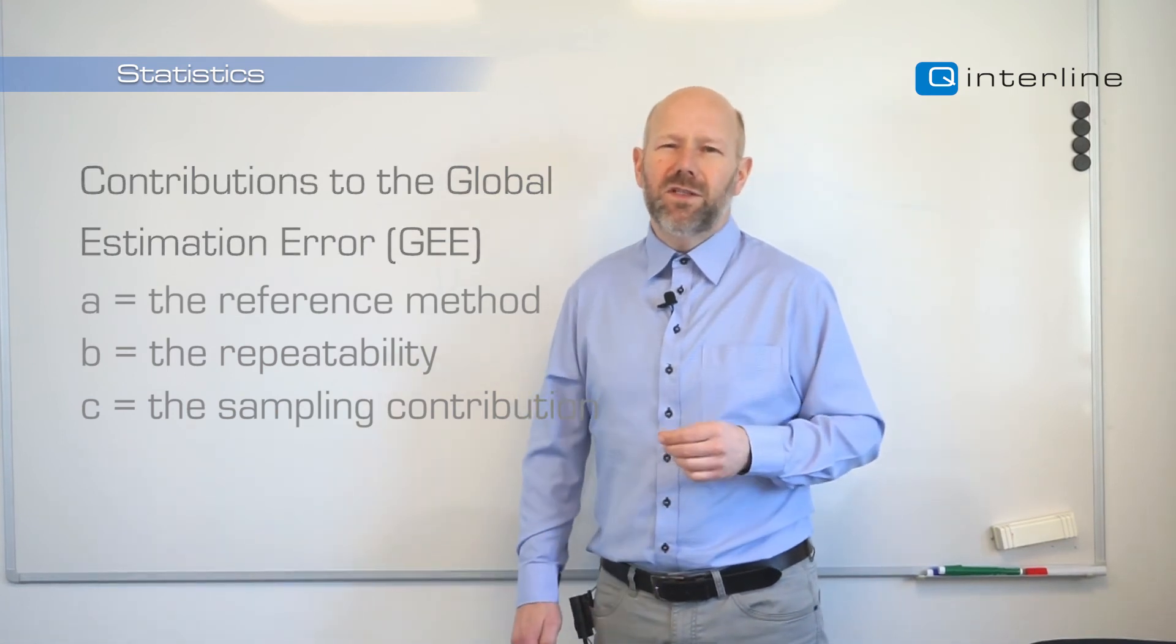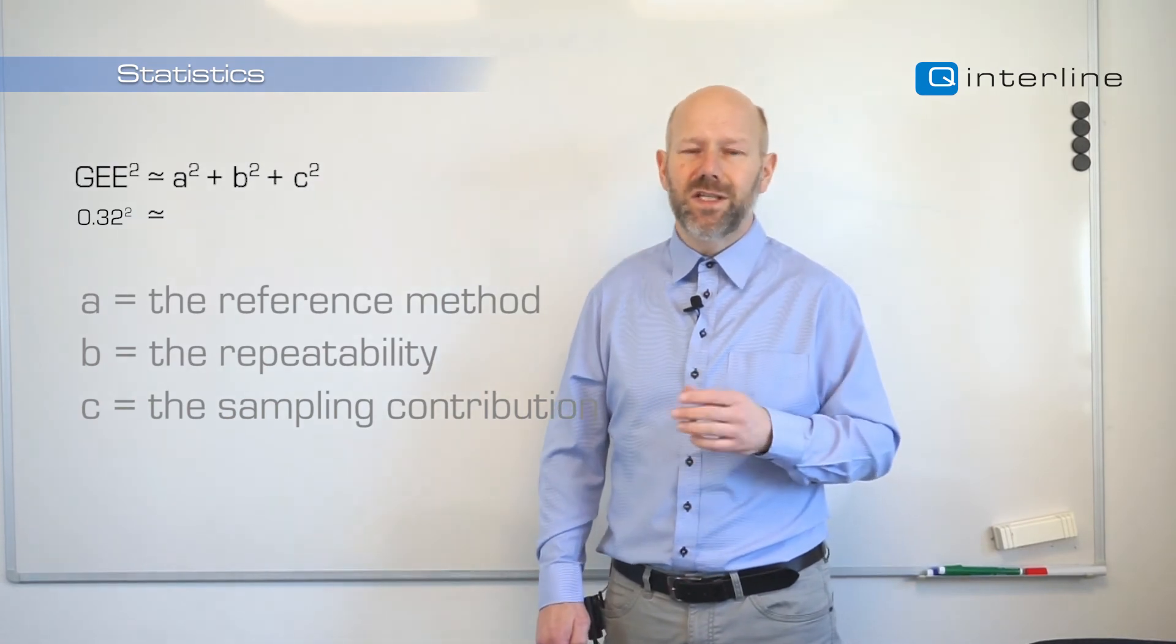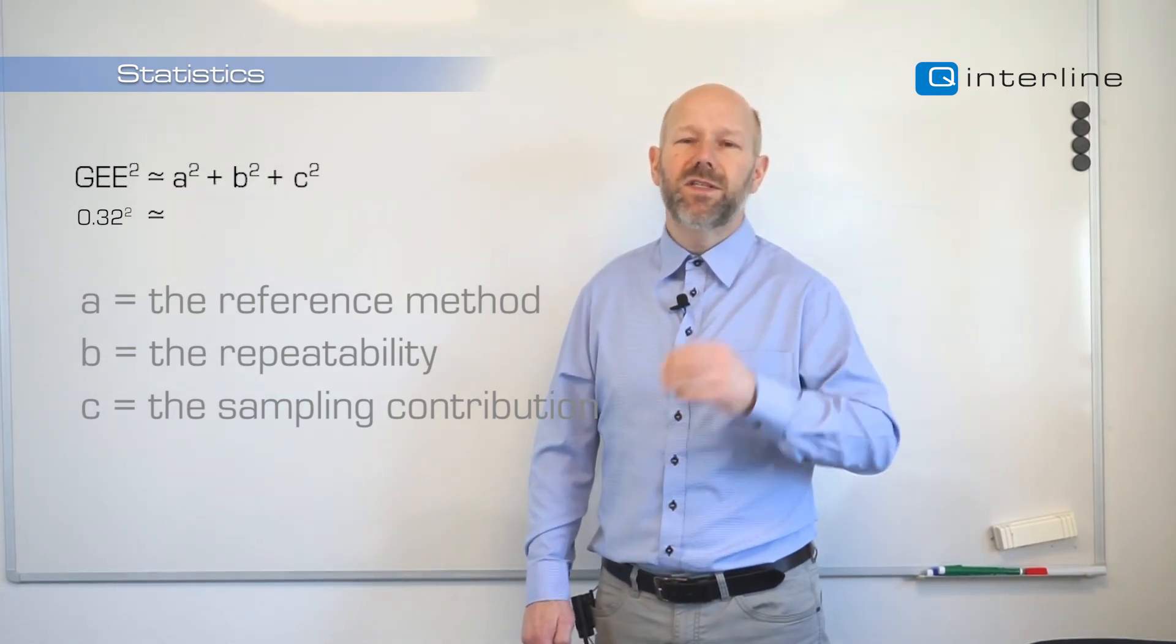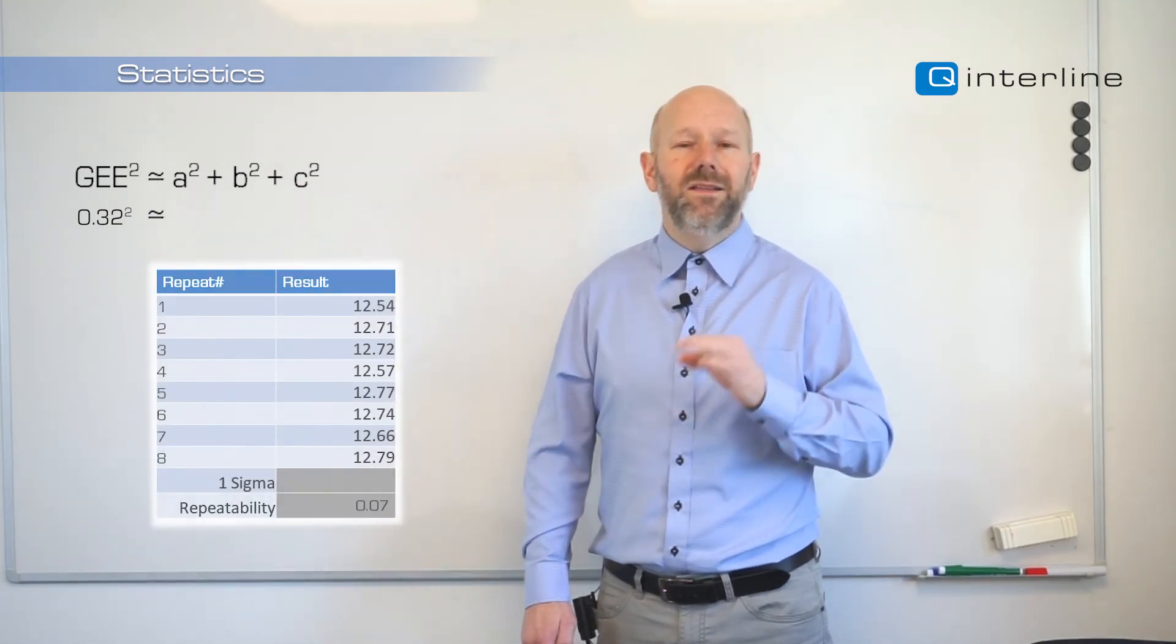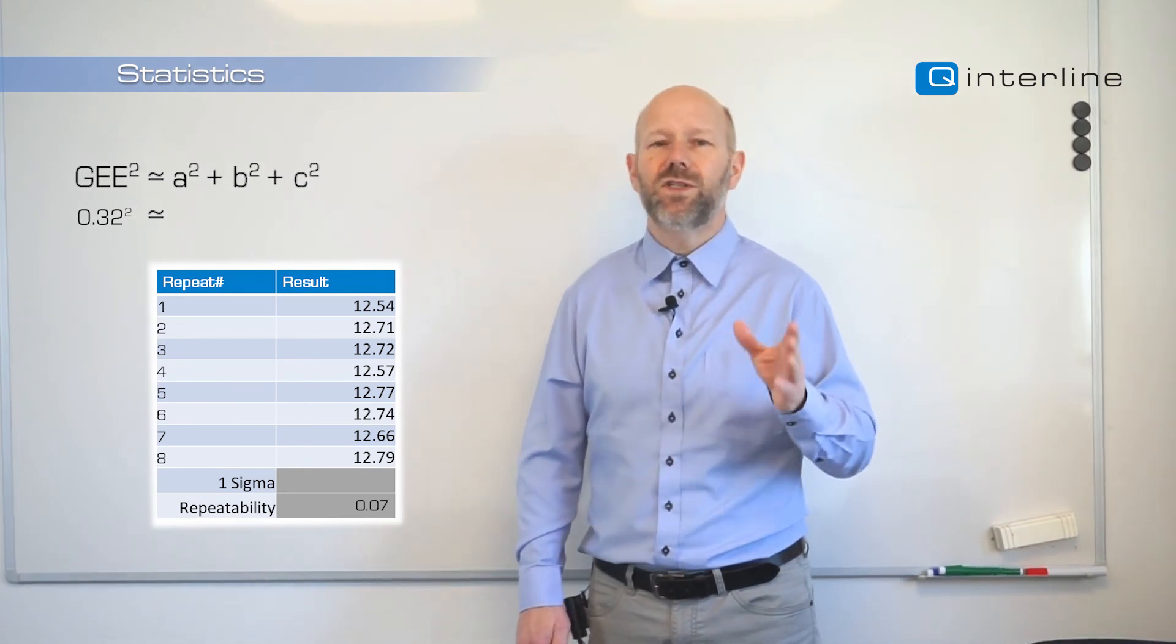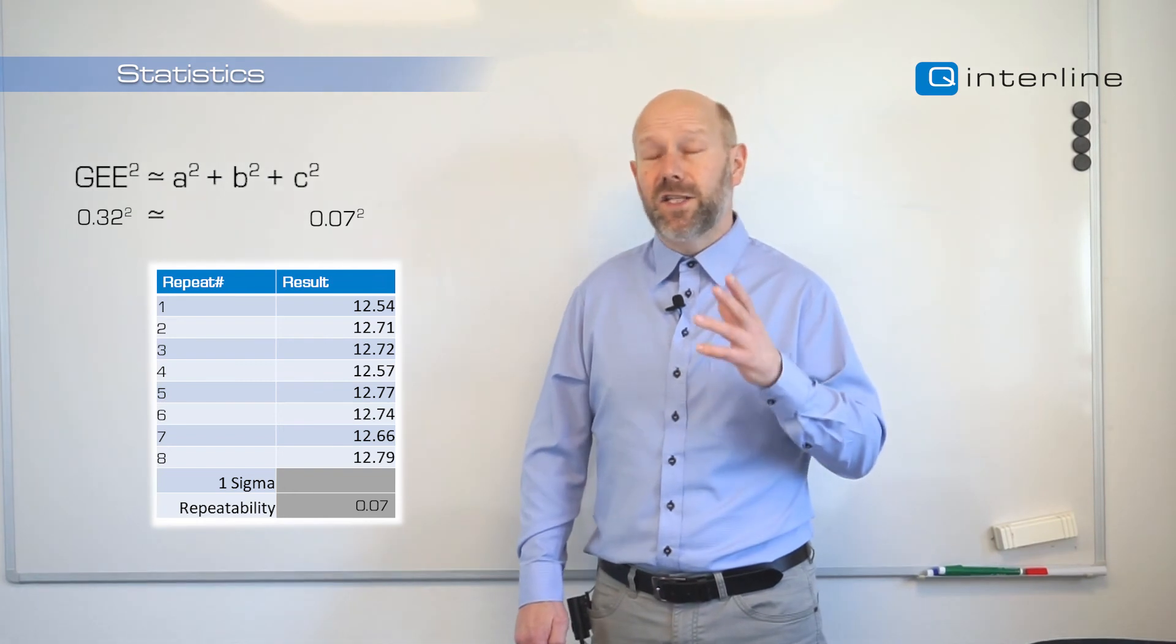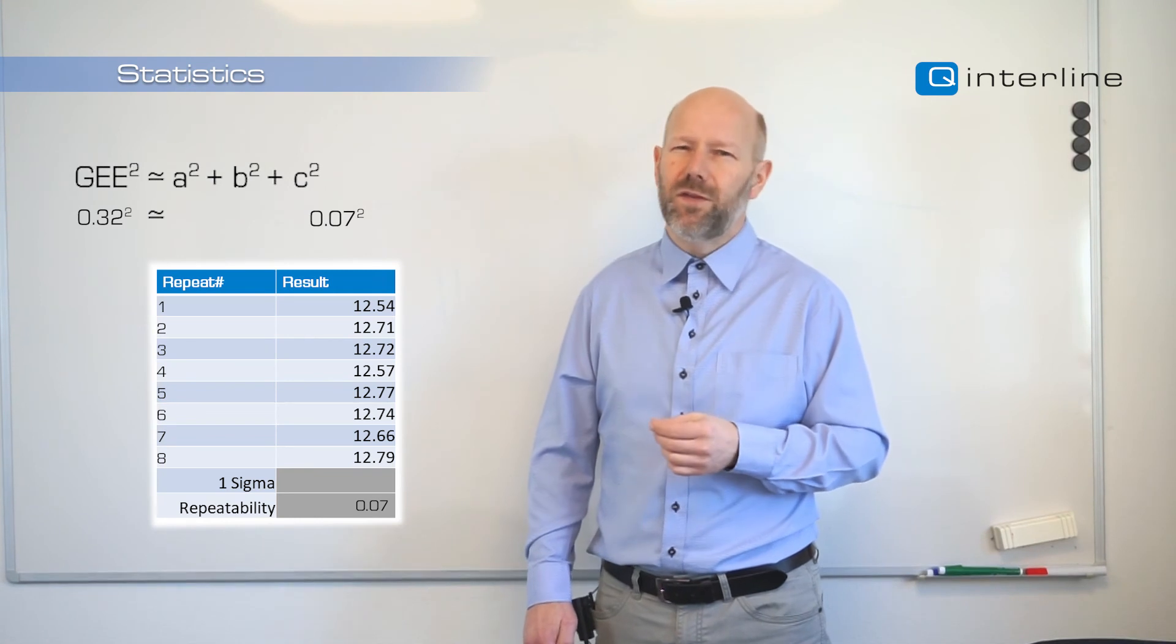The link between these three can be seen in this formula. So the question is, does it really add up? Well, the first thing we can do is test repeatability. Simply leave the same sample in the analyzer and run it eight times. In this case, we see that we ran the sample eight times and the standard deviation was 0.07. So the 0.07 repeatability does not really explain a majority of the 0.32. So there must be other things.